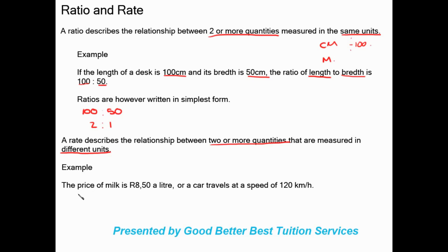For example, an example of rate would be the price of milk is 8.50 a litre, or a car travels at a speed of 120 kilometers per hour. You can see here it's more evident the two different quantities that we're using, the two different units of measurement. We have kilometers and we have hours.